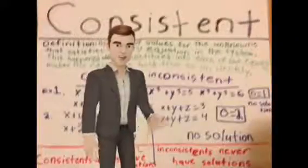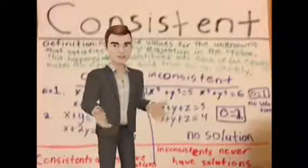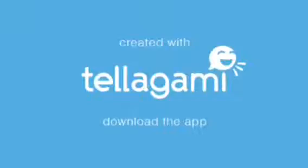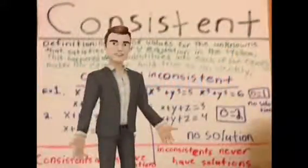Consistent is one set of values for the unknowns that satisfies every equation in the system. This happens when substituted into each of the equations makes the equation hold true as an identity. You can tell something is consistent if it always has a solution.